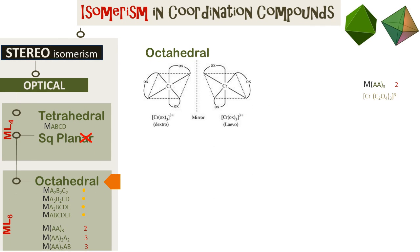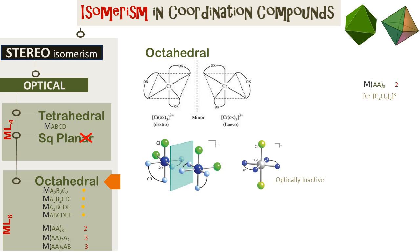Octahedral complexes of type M(AA)3, where AA is a bidentate ligand, show two optical isomers. In contrast, certain geometric isomers in this family are not optically active — they are geometric isomers and do not show optical isomerism.